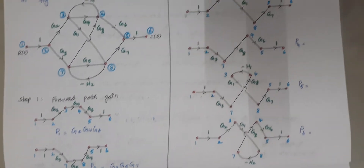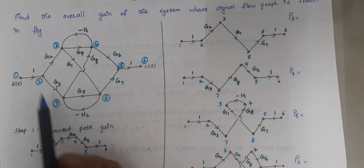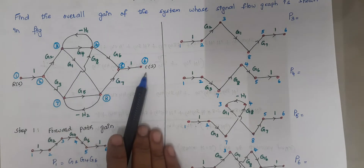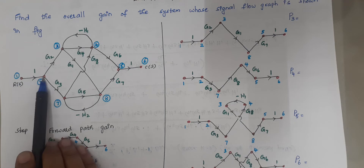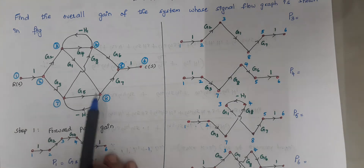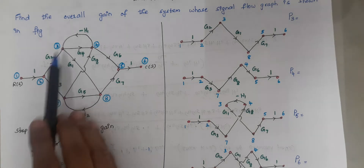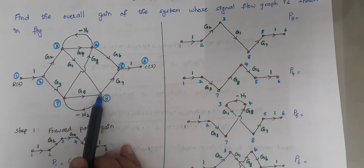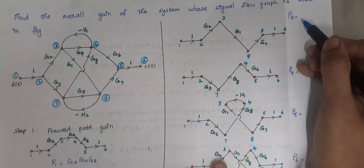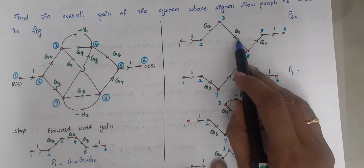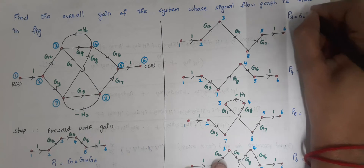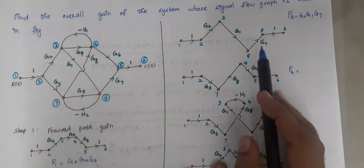The next path starts from node 1, 2, 3, 8, 5, and 6. It starts from node 1 to 2, then 3, then 8, then 5 and 6. This is also another forward path because all the arrow heads move forward. To calculate the gain, multiply the values: G2 × G1 × G7, since those intermediate branches have gain 1. So P3 = G2 · G1 · G7.